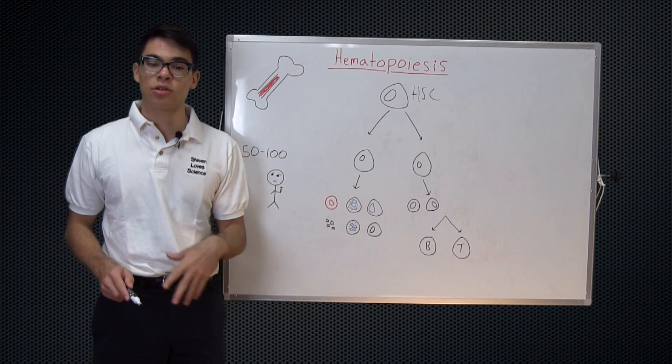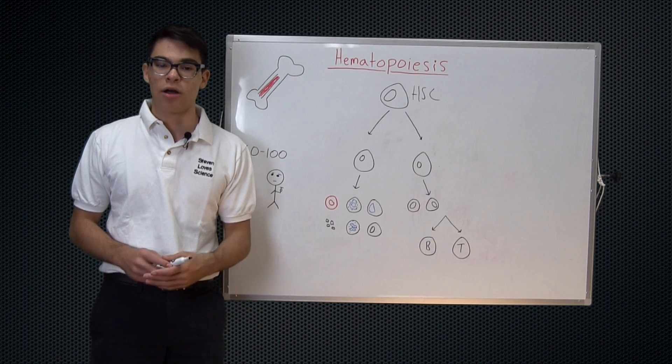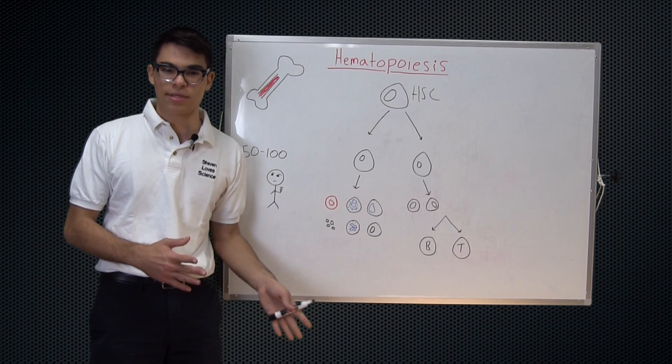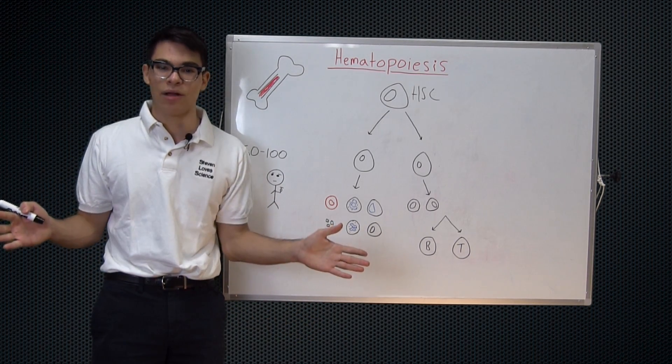For example, the hematopoietic stem cell is a pluripotent stem cell that can differentiate into any type of blood cell, be it a lymphocyte or a erythrocyte or a megakaryocyte. This is in contrast to what's called a totipotent stem cell or very early on embryonic stem cells which can differentiate into any cell in the body.